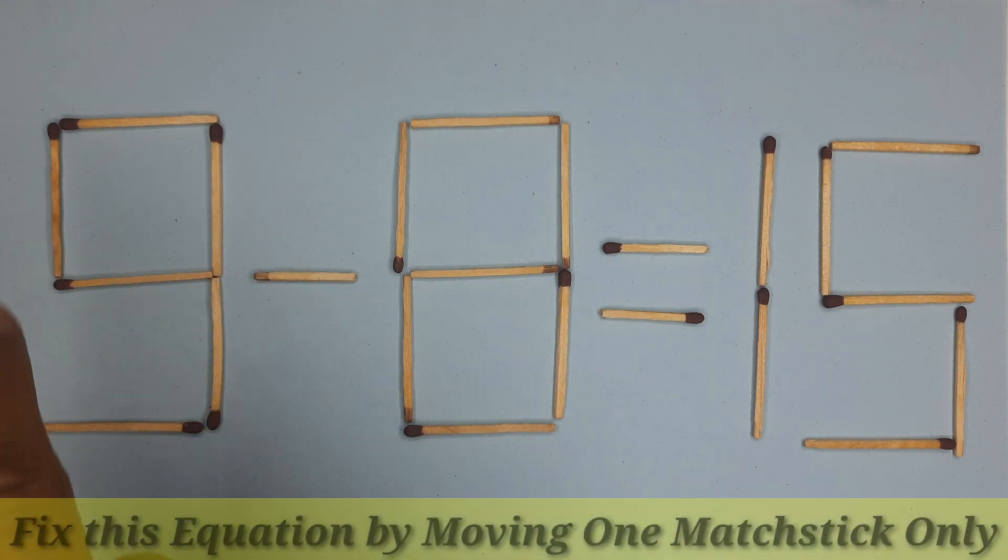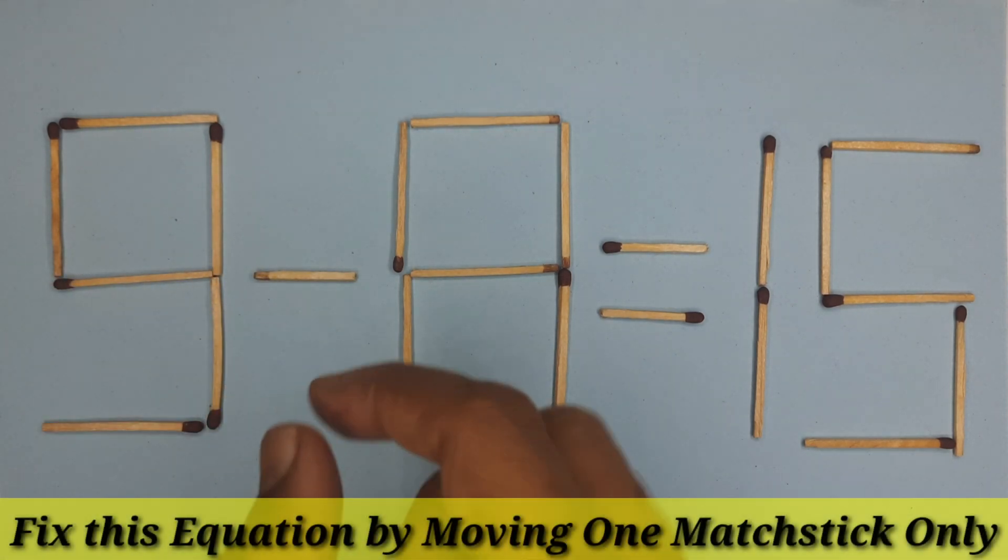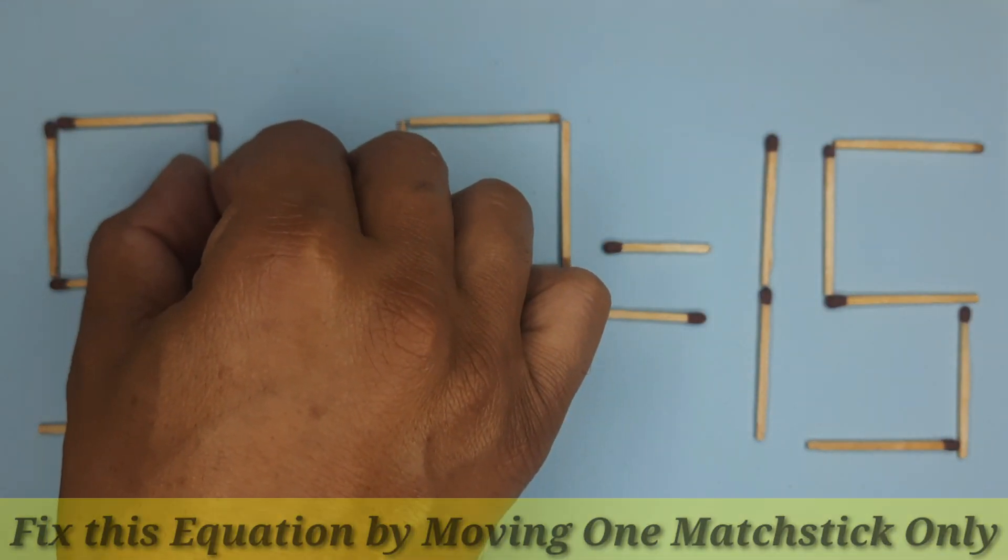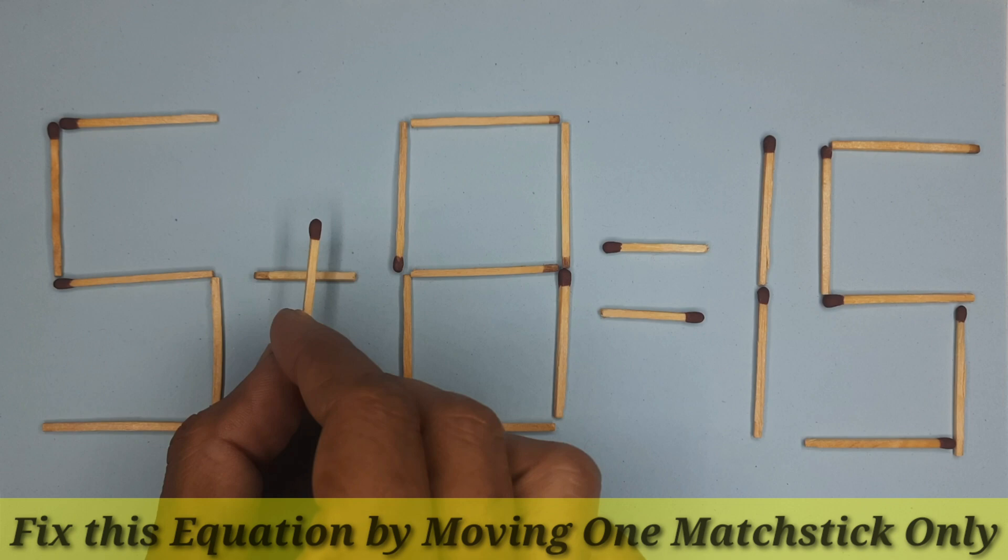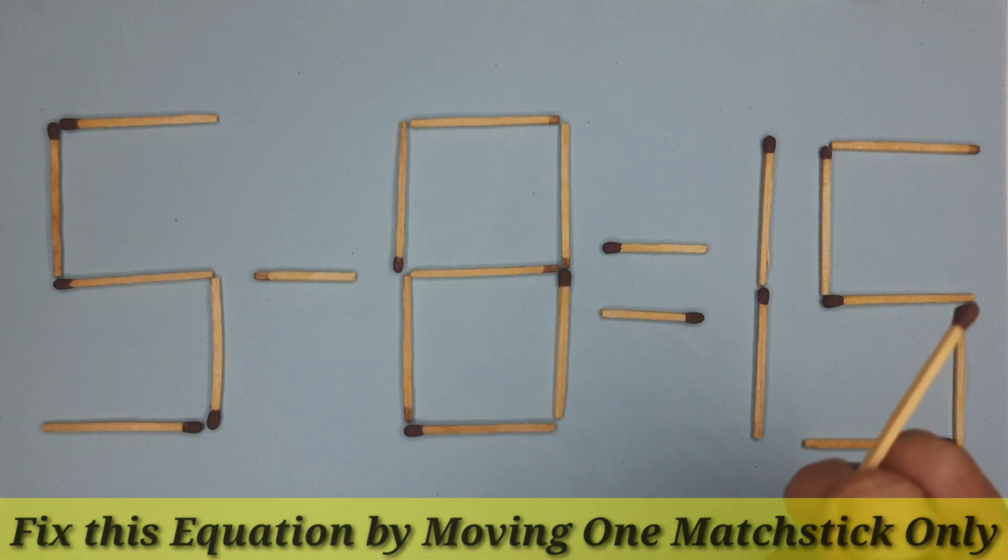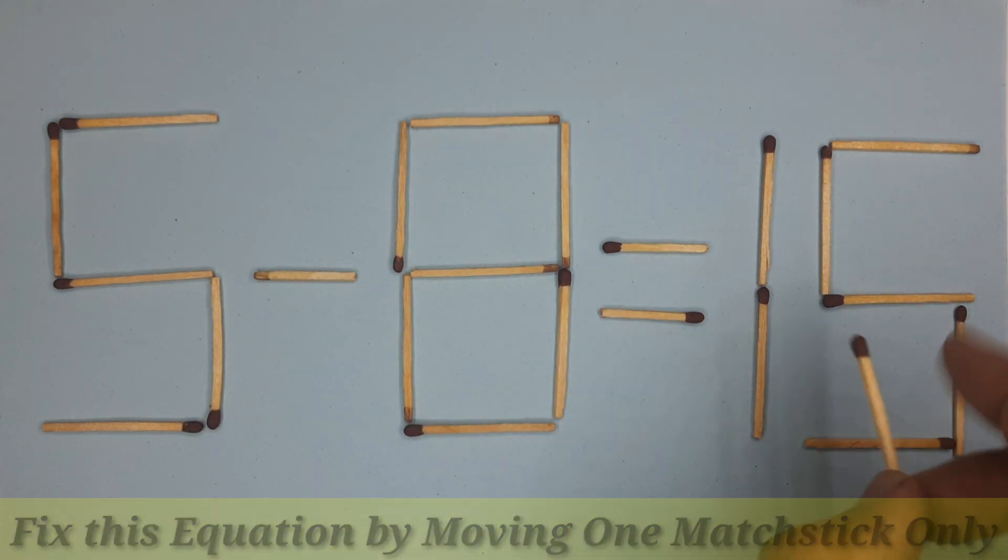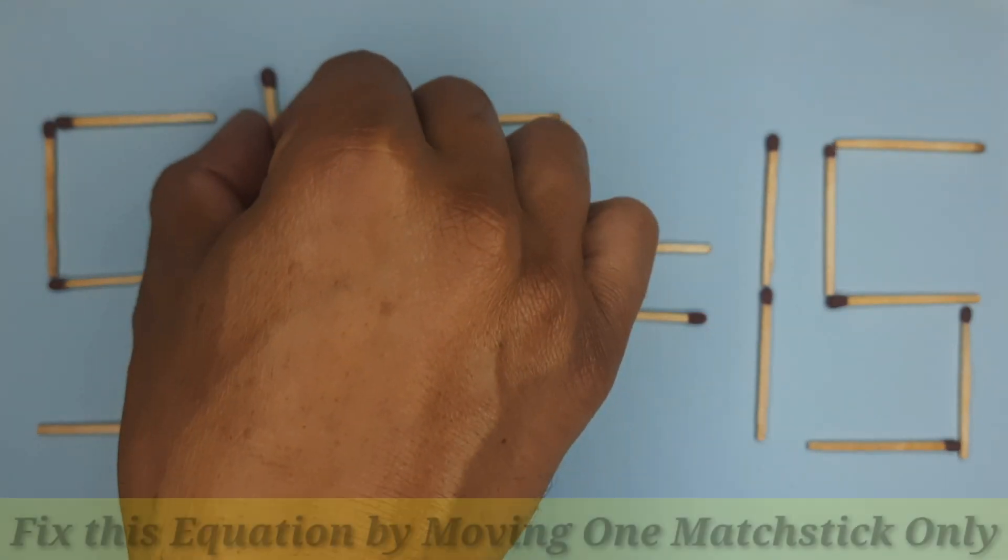We can change 9 into 5. I should change negative into positive, that means 5 plus 8, that is 13. I have increased a bit but we need 15, so we should look for some other options.